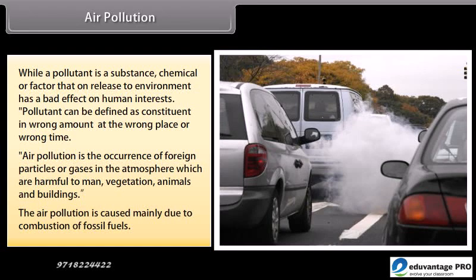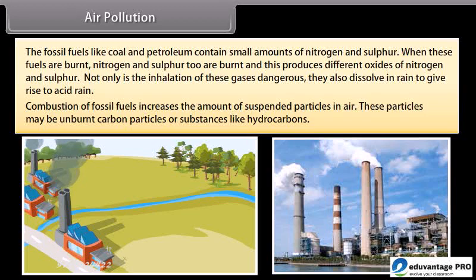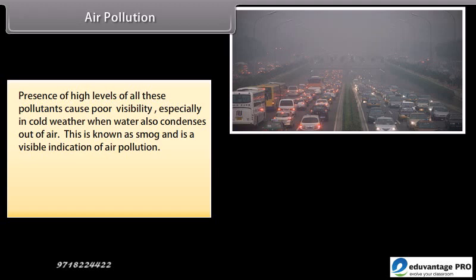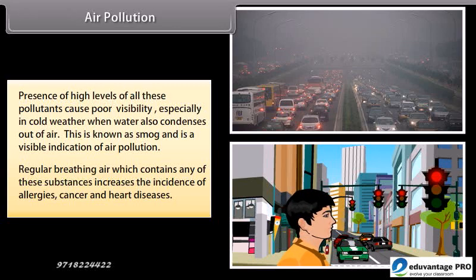Air pollution is caused mainly due to combustion of fossil fuels. Fossil fuels like coal and petroleum contain small amounts of nitrogen and sulfur. When these fuels are burned, nitrogen and sulfur are also burned, producing different oxides of nitrogen and sulfur. Inhalation of these gases is dangerous, and they also dissolve in rain to give rise to acid rain. Combustion of fossil fuels also increases suspended particles in the air, such as unburned carbon particles or hydrocarbons. High levels of these pollutants cause poor visibility, especially in cold weather — known as smog. Regular breathing of such air increases the incidence of allergies, cancer and heart diseases.